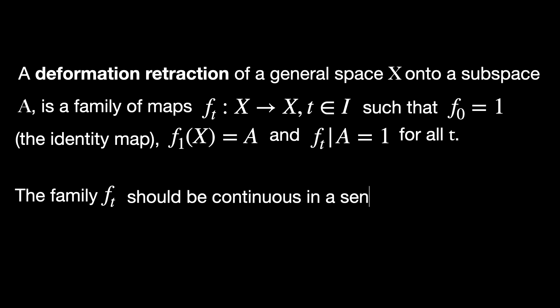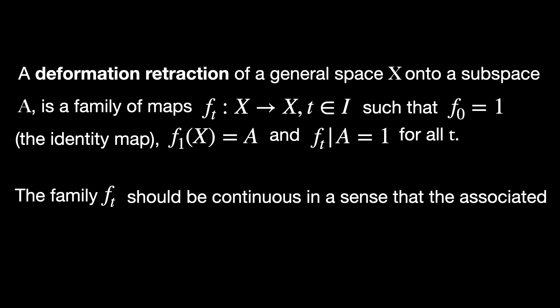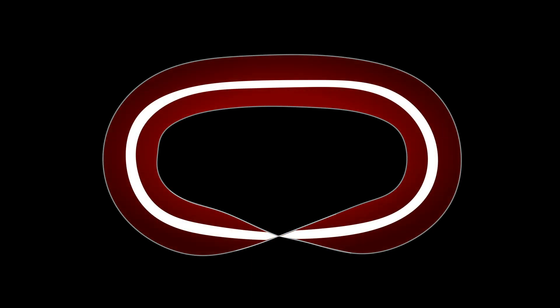The family f_t should be continuous in the sense that the associated map from X cross I to X is continuous. It's easy to find more examples similar to the one we started with, with the deformation retraction f_t being obtained by sliding along lines. Here's an example of the deformation retraction of a Möbius strip — a one-sided surface — onto its core circle in a continuous way.